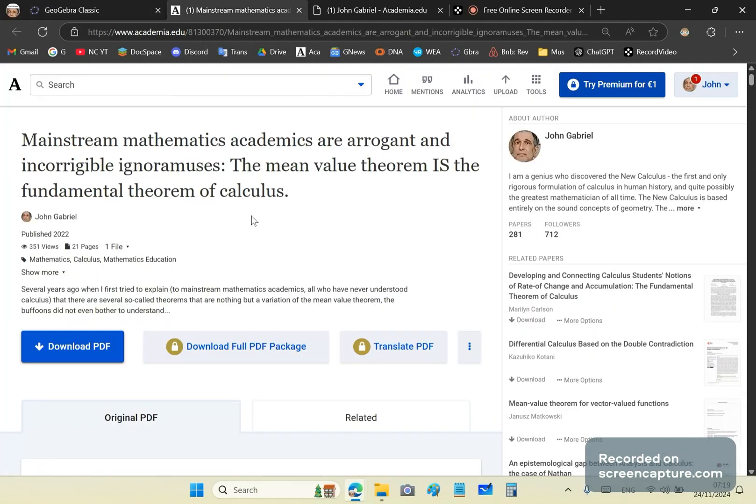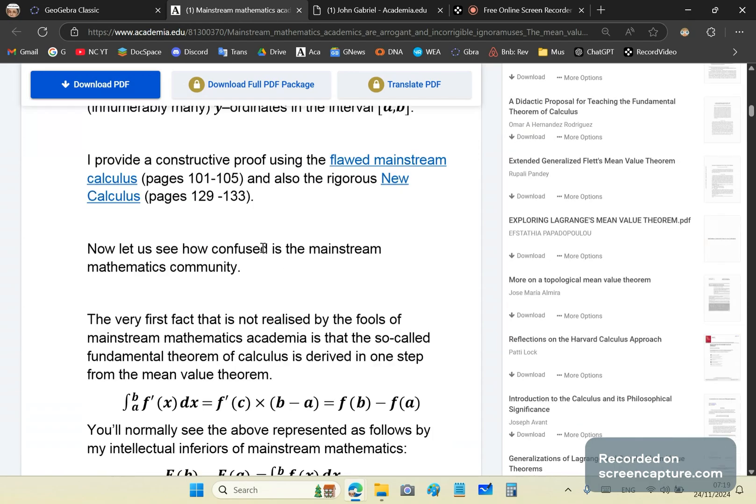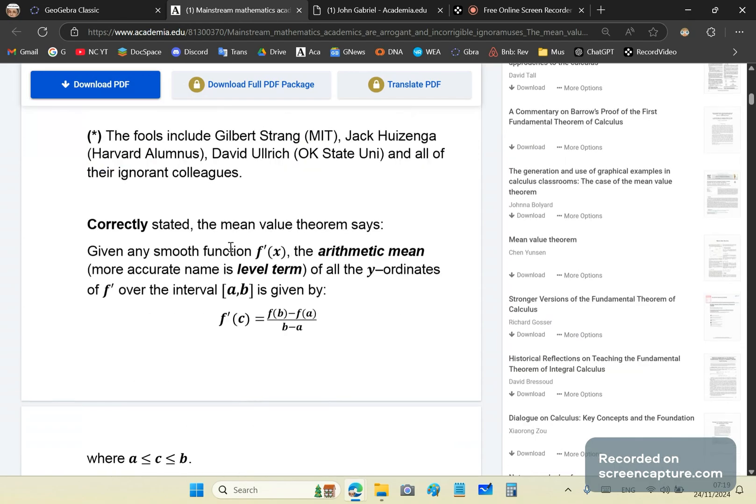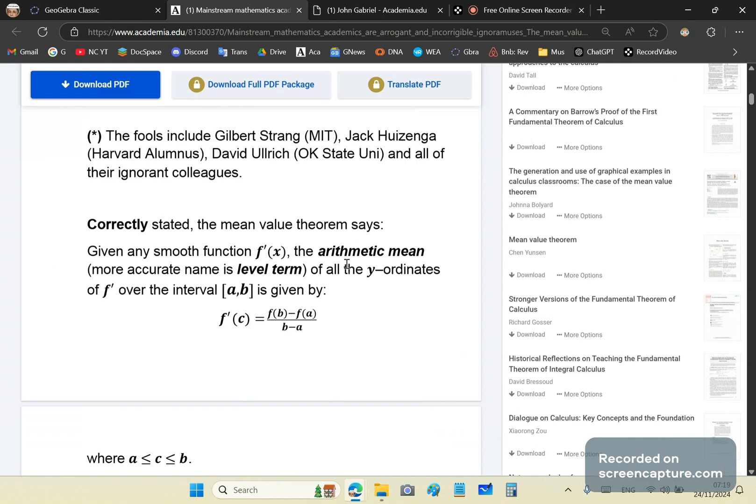So here's an article which is written for the hyper stupid math professors of mainstream academia. I will put a link to this also in the details section. And hopefully, by the way, the correct value of the mean value theorem is this. Given any smooth function f prime of x, which is a derivative or a function, because a derivative is a function, isn't it? A derivative function. Morons.